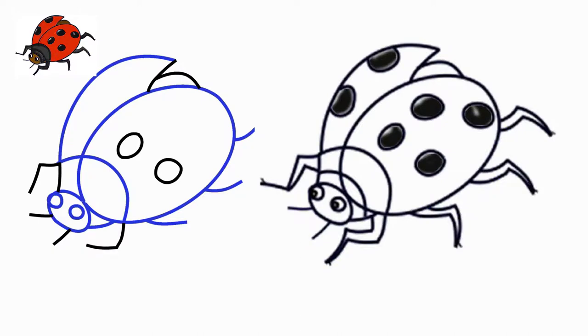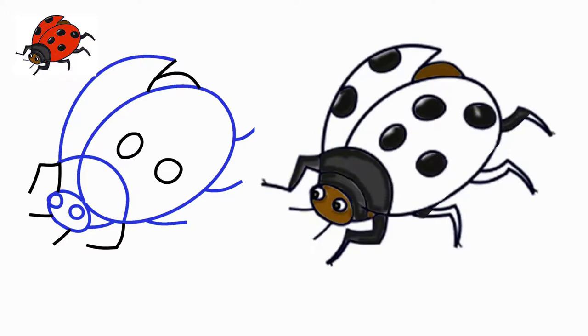Step 6. Draw the paws and part of the torso in a dark, almost black color.